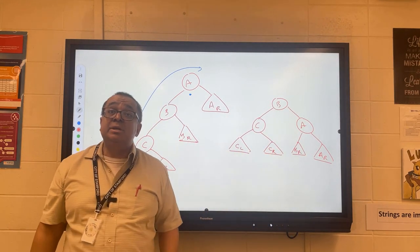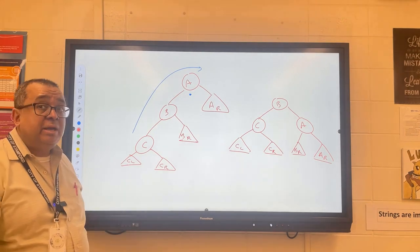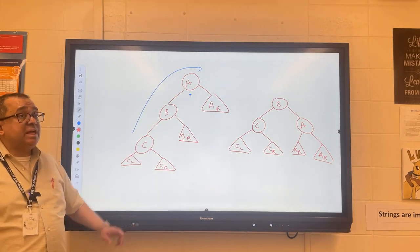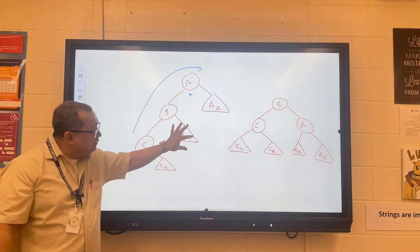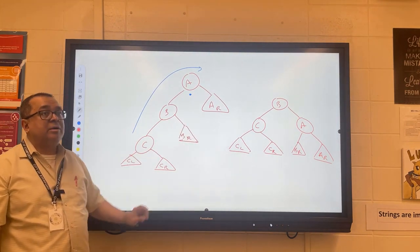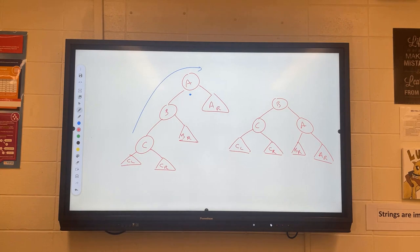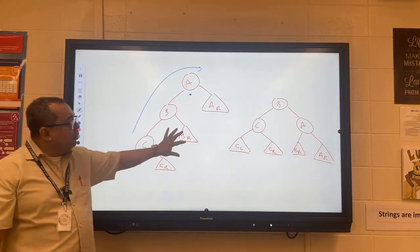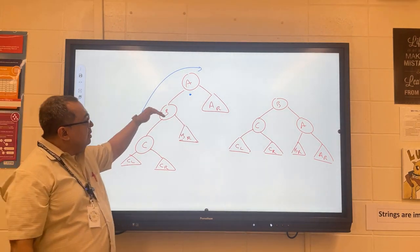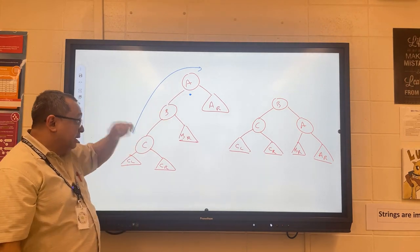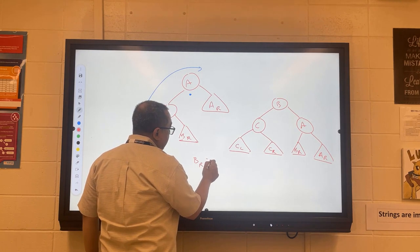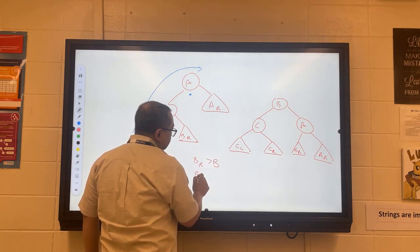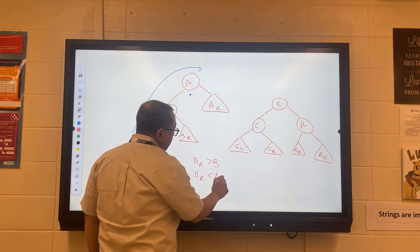Let's look at B sub R for a second and tell your partner what is true about every single element in B sub R. What are the two things that we can say mathematically about all the elements of B sub R? Greater than B and less than A. Let's write those down: B sub R is greater than B, and B sub R is less than A.